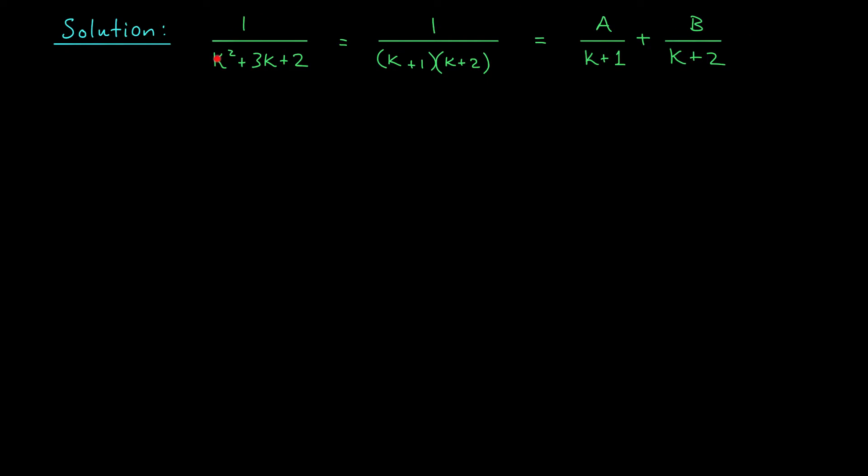Well we can figure that out by multiplying both sides of this equation by the denominator that you see here. What we'll get is 1 is equal to a times the second factor, k plus 2, plus b times the first factor, k plus 1. By plugging in some carefully chosen values of k, we should be able to figure out the constants a and b. For instance, what happens when we plug in k equals minus 1? When we try this, our second factor, k plus 1, is going to disappear entirely. And our first factor, k plus 2, will be equal to 1. So we get 1 is equal to 1 times a, or in other words, a is equal to 1.